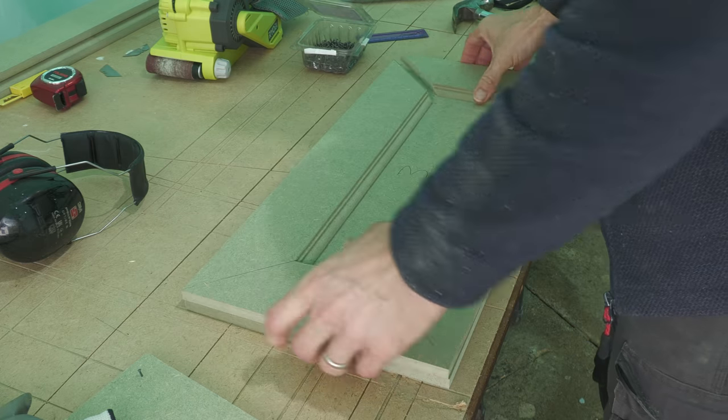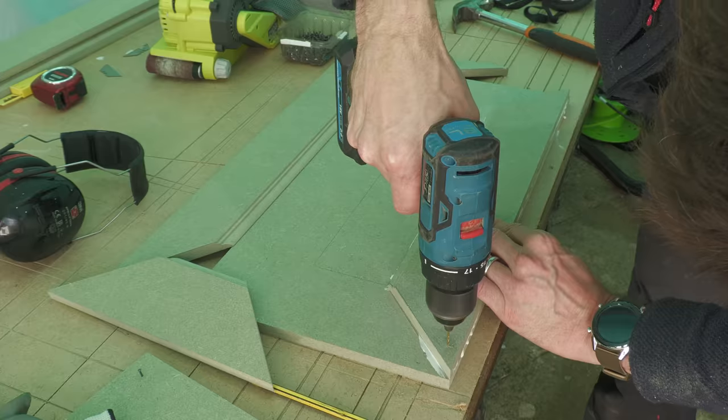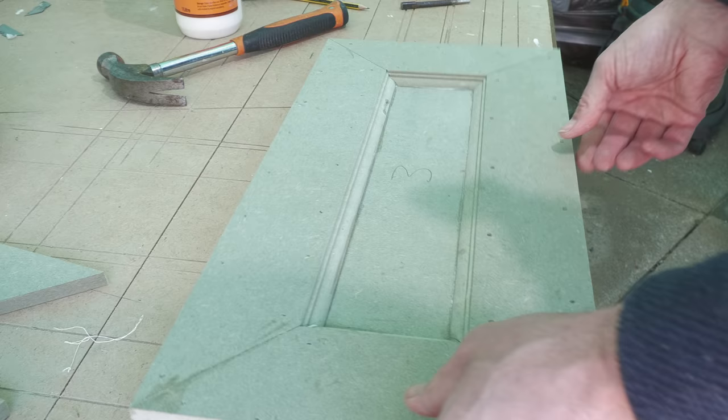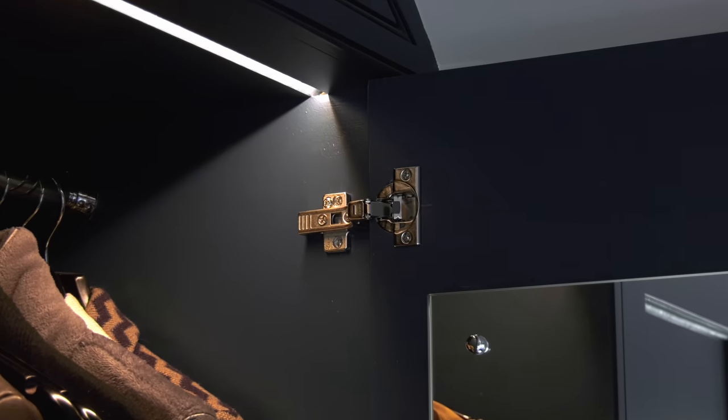Now there are lots of ways you can construct wardrobe doors, but I've always favoured the DIY Faker Shaker style approach with a single 12 millimetre base piece, and then 12 millimetre rails and styles glued and pinned to the front to create that panelled effect. I like making my doors this way rather than say with loose tenons because they're so easy to measure and construct with everyday DIY tools, and they're also incredibly strong when combined with the concealed hinges.